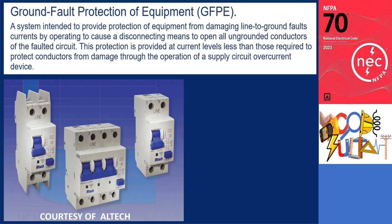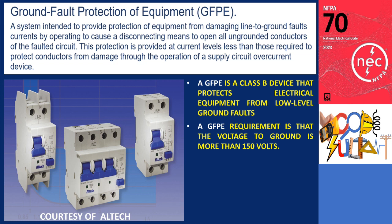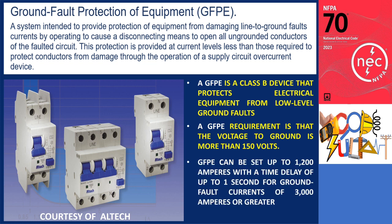Ground Fault Protection of Equipment (GFPE) is a system intended to provide protection of equipment from damaging line-to-ground fault currents by operating to cause a disconnecting means to open all ungrounded conductors of the faulted circuit. This protection is provided at current levels less than those required to protect conductors from damage through the operation of a supply circuit overcurrent device. A GFPE is a Class B device that protects electrical equipment from low-level ground faults but does not provide protection for personnel like a Class A GFCI device does. The GFPE requirement applies when the voltage to ground is more than 150 volts, which rules out the typical 120/208 volt system. In a 277/480 volt system, the voltage to ground is 277 volts. Furthermore, a GFPE can be set up to 1200 amperes with a time delay of up to one second for ground fault currents of 3000 amperes or greater, which would be lethal to a human being.